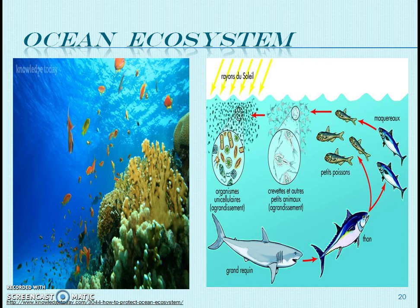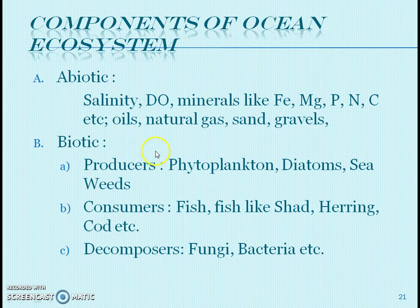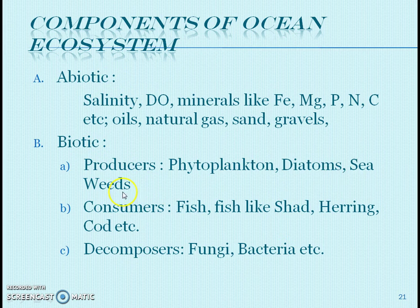Ocean ecosystem is the largest ecosystem, as two-thirds of Earth's surface is covered by ocean. Abiotic components include salinity, tides, and minerals like iron and magnesium, as well as oils and natural gas. Biotic producers are phytoplankton, diatoms, and seaweeds. Consumers include fish such as shad, herring, and cod. Decomposers are fungi and bacteria. This concludes the overview of various types of ecosystem. Thank you.